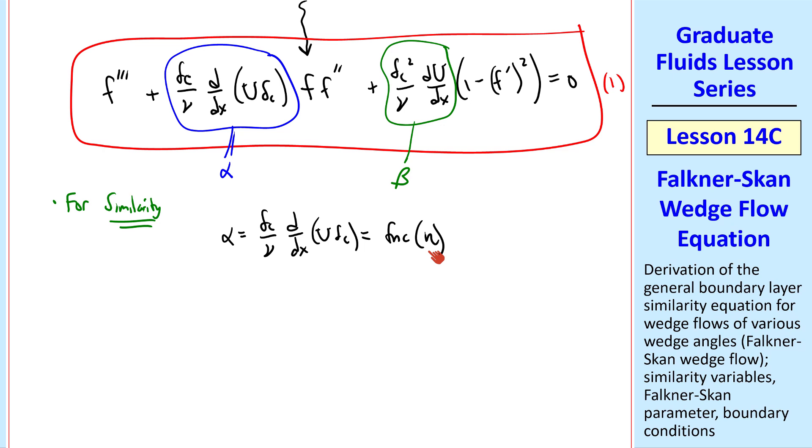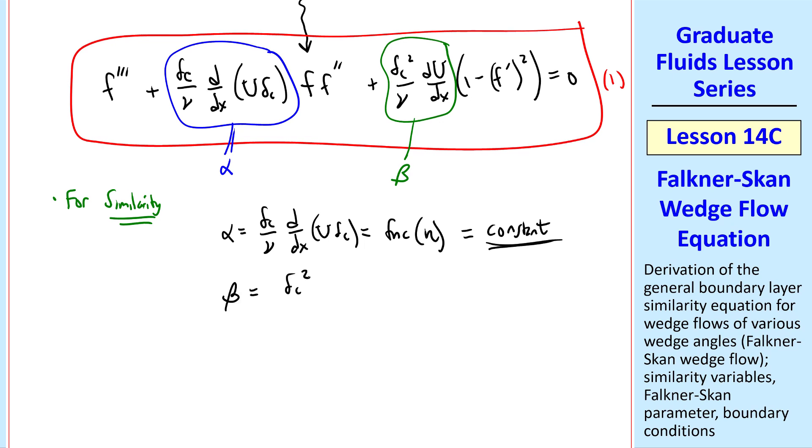But the left hand side is a function only of x, and the right hand side is a function only of eta, which is itself a function of x and y. If we change y, we change eta, but nothing changes here. So the only way this works is if alpha is a constant. Similarly for beta, beta must be a constant.